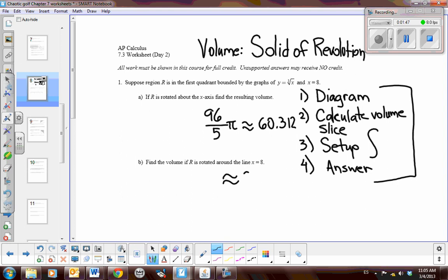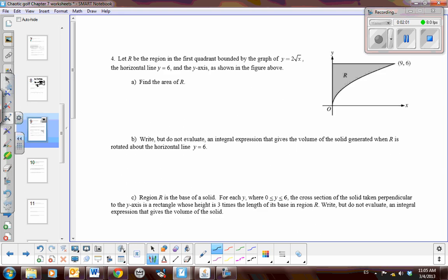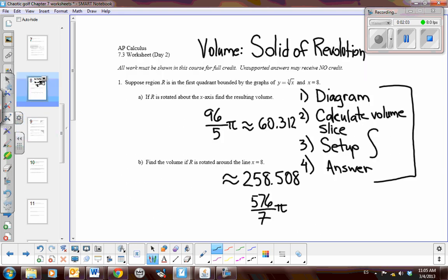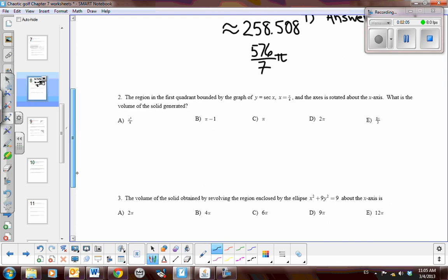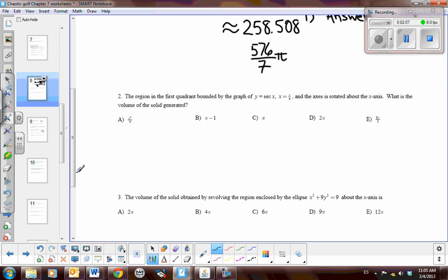For part B, the approximation is 258.508 units cubed. I believe the exact value was 576 over 7 pi. Now, problem number two, the correct answer for this will be C. So do your setup, do your diagram, and see if you get that correct answer.